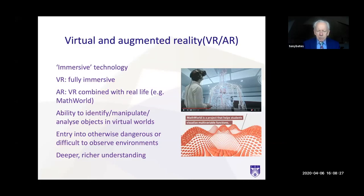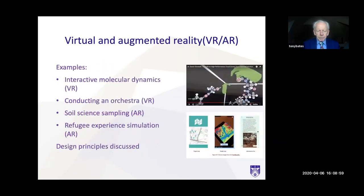What these technologies allow you to do is to identify, manipulate, or analyze objects in a virtual world. They allow you entry into otherwise dangerous or difficult-to-observe environments, and what they result in — if they're well designed — is a deeper, richer understanding, and sometimes the development of skills, or getting a skill to the point where you can actually apply it in a real environment. One example in the book is manipulating interactive molecular dynamics — you can actually go inside a complicated molecular structure and play around with it, and if you change one part you see how the rest changes.